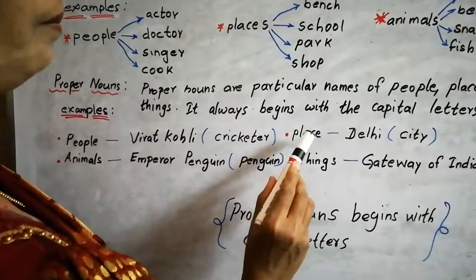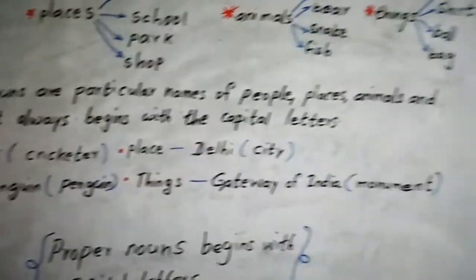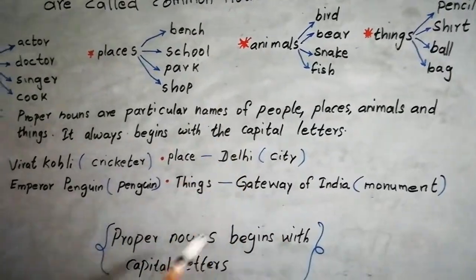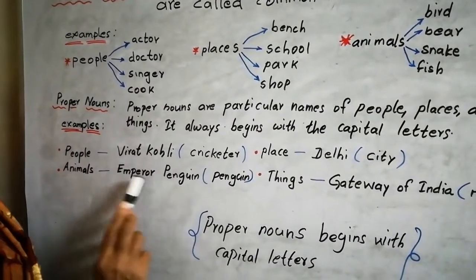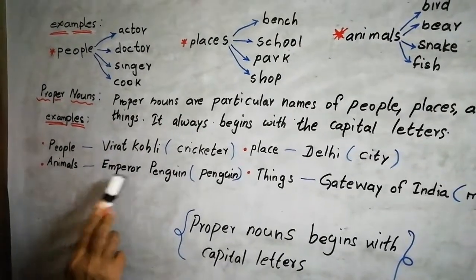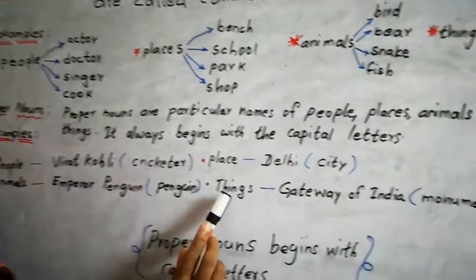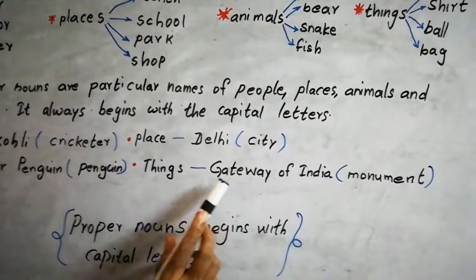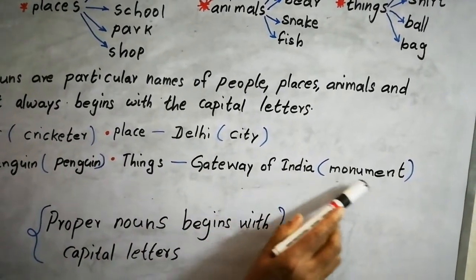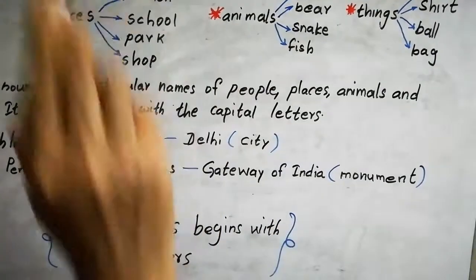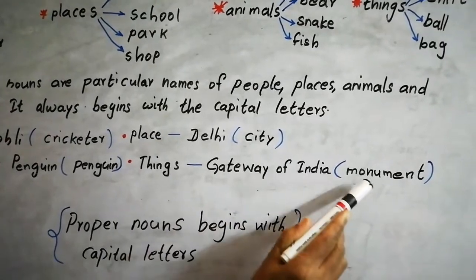And next, place: Delhi. Delhi is a big city. So Delhi is a city. And animals: Emperor Penguin — we have given a name for this penguin, which is Emperor Penguin. Next, things: Gateway of India. It is a monument, so it is a thing. Gateway of India is a monument.